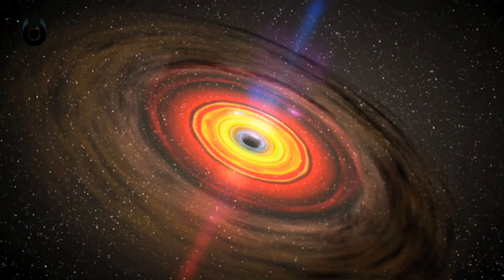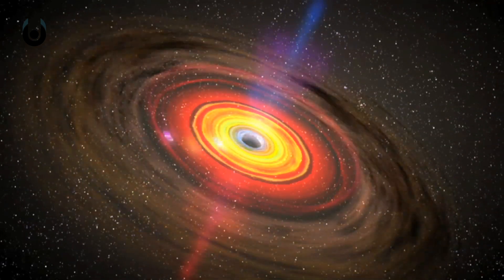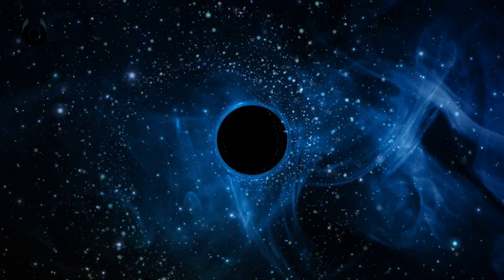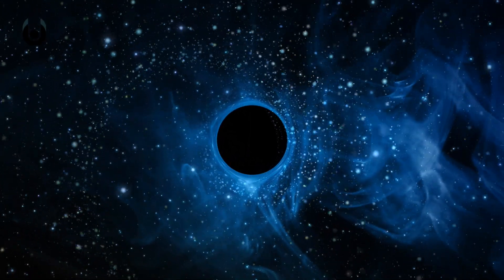But in fact, their indiscriminate destruction is actually what allows us to observe them in the first place. When matter falls into one, an incredibly bright accretion disk forms around the edge, which we can use to scientifically calculate where the black holes are.